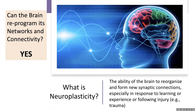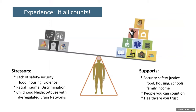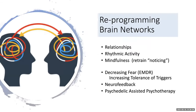Can the brain reprogram its networks and connectivity? Yes. What is neuroplasticity? It's the ability of the brain to reorganize and form new connections, especially in response to learning or experience. We have to remember that just because a person had severe trauma, it does not doom them to dysregulated brain networks. The outcome of brain function and health depends on a balance between stressors and supports. Brain networks can be reprogrammed — things that have been shown to make a difference are relationships, rhythmic activity, and mindfulness, which is to retrain the body in noticing small things.